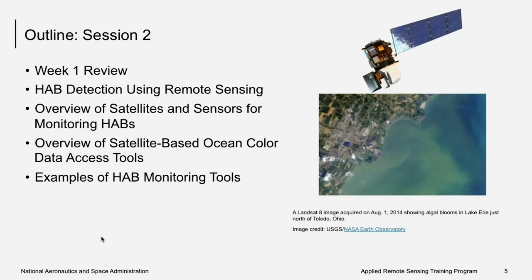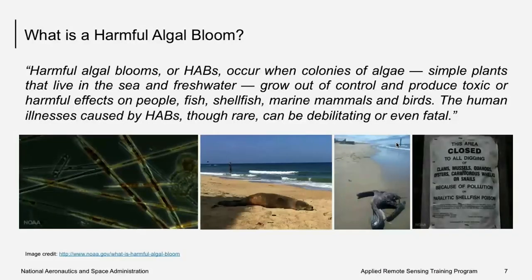Today's session outline: first a brief review of what Sherry covered last week, then we'll discuss HAB detection using remote sensing principles, satellites and sensors specifically used for monitoring HABs, how datasets can be accessed, processing tools, and finally examples of near real-time HAB monitoring tools. The right-hand side shows a Landsat satellite image showing algal bloom in Lake Erie in August 2014.